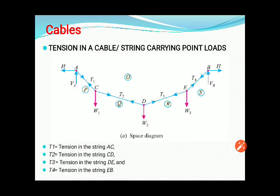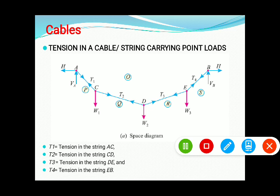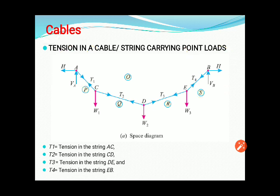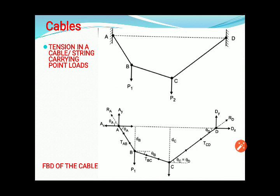Third assumption: the cable and the supporting loads are in one vertical plane. Fourth: the cross-section of the cable is uniform. For a cable supported at A and B, both supports are pin supports, so there are two reactions acting in opposite directions. The tensions T1, T2, T3, and T4 are the tensions in the portions AC, CD, DE, and EB respectively.